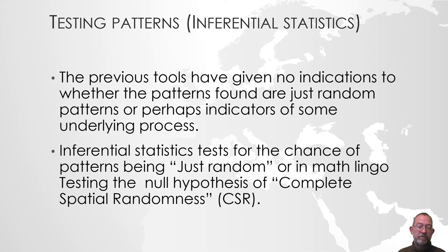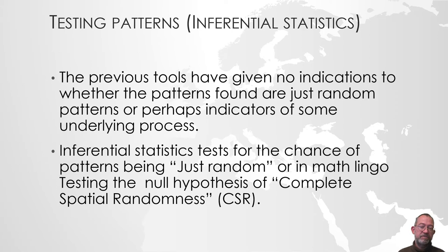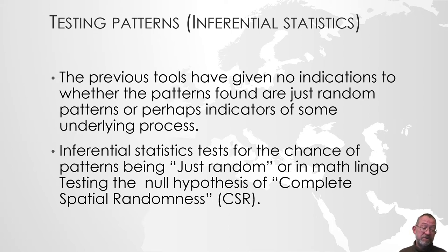We will be testing for complete randomness in either their location or in their assignment of their attributes. With polygons, it's mostly a question about what is the neighbor — does the value from one municipality give us more or less information about the neighbors? That's complete spatial randomness: if you have points they are randomly distributed, or if you have polygons fixed in their location, knowing the value of a specific municipality gives you no information about its neighbors.